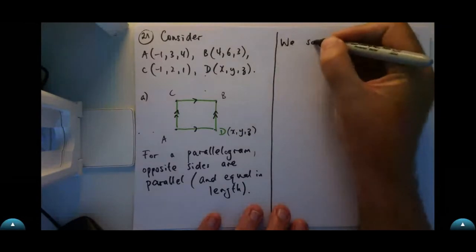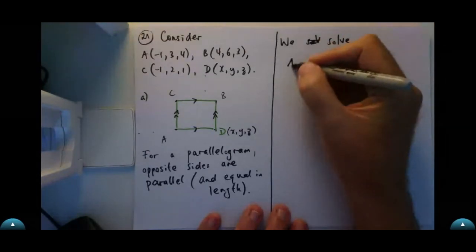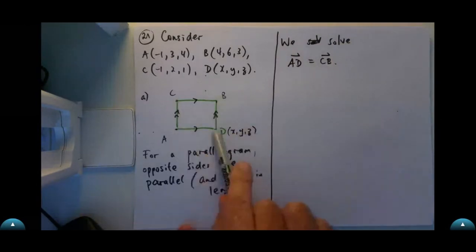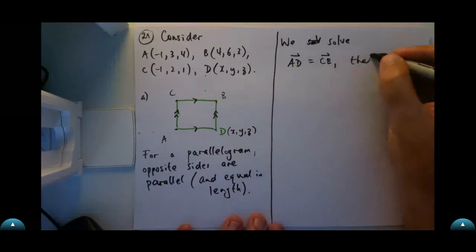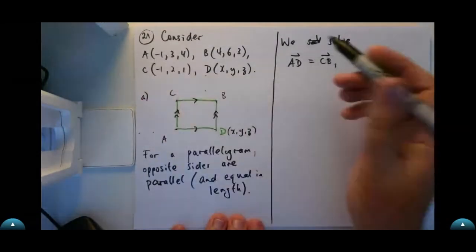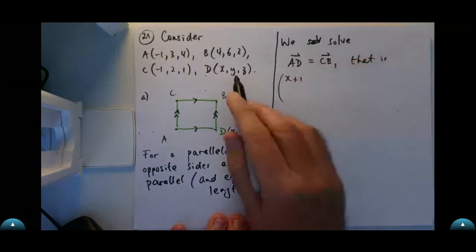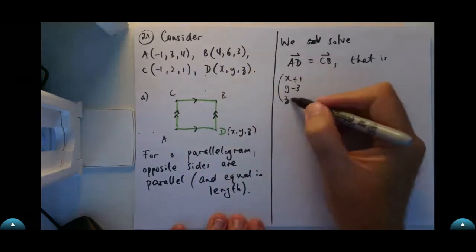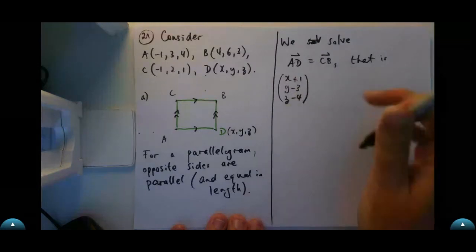Let's solve it. AD equals CB — the direction is the same, the length is the same, and we'll find our coordinates from that. So the vector from A to D is that position vector minus that position vector: X minus negative 1, Y minus 3, and Z minus 4. That's a 3 and that's a Z — don't confuse them, I put little tails on my Z.